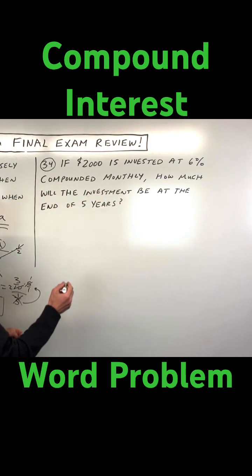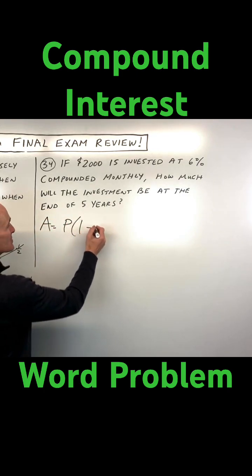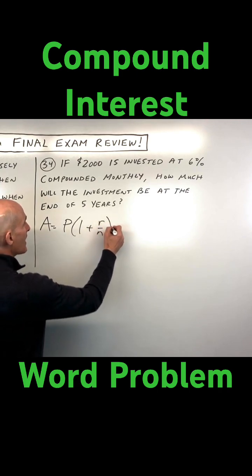Okay, so that's interesting. Compounded monthly. The formula you want to know here is the compound interest formula, which is this one right here. You might want to write this down, memorize this.